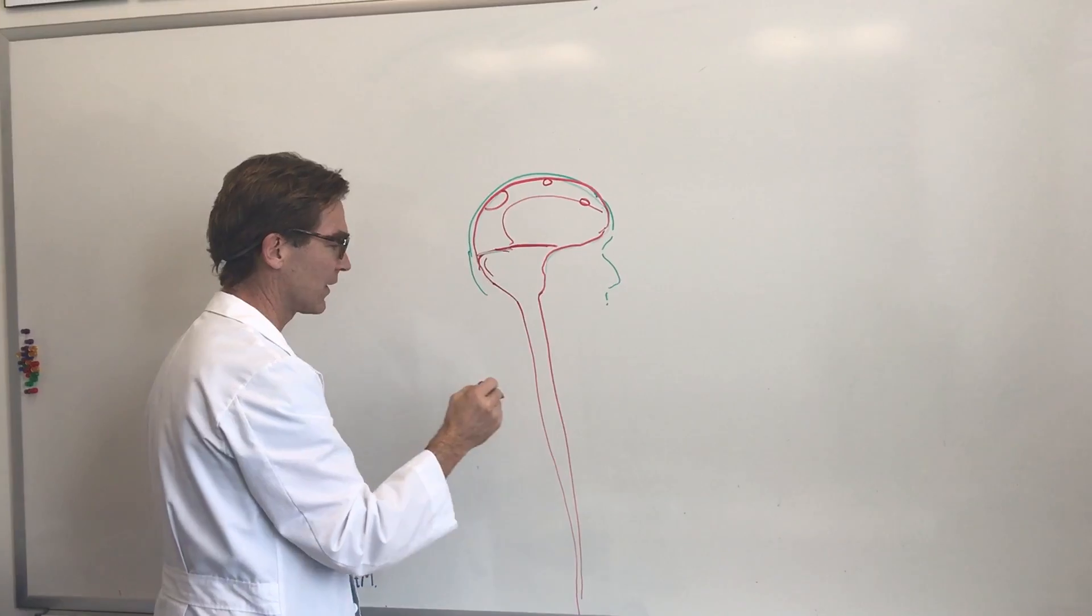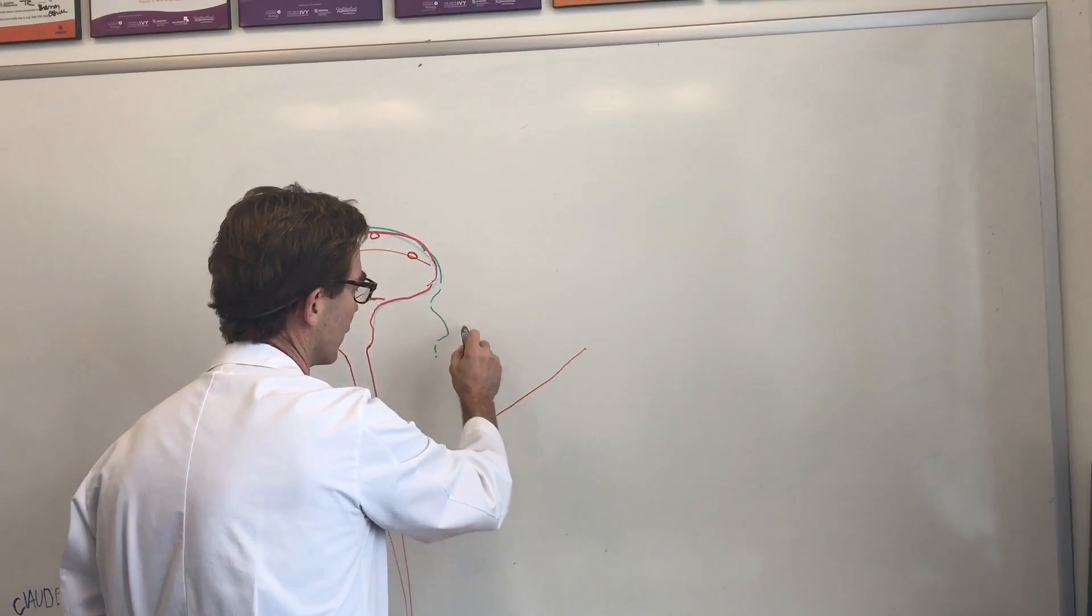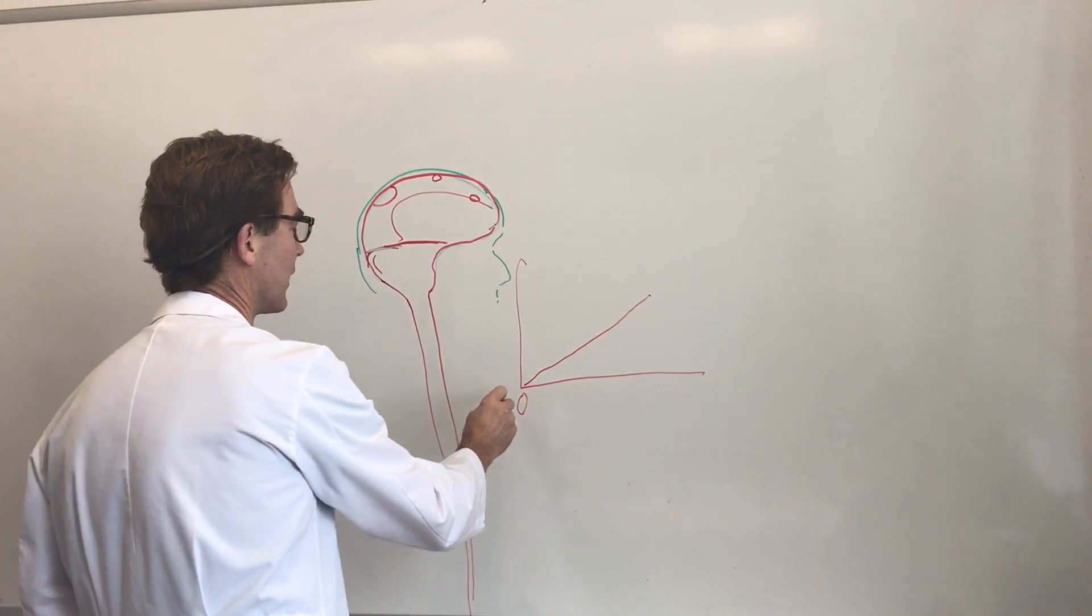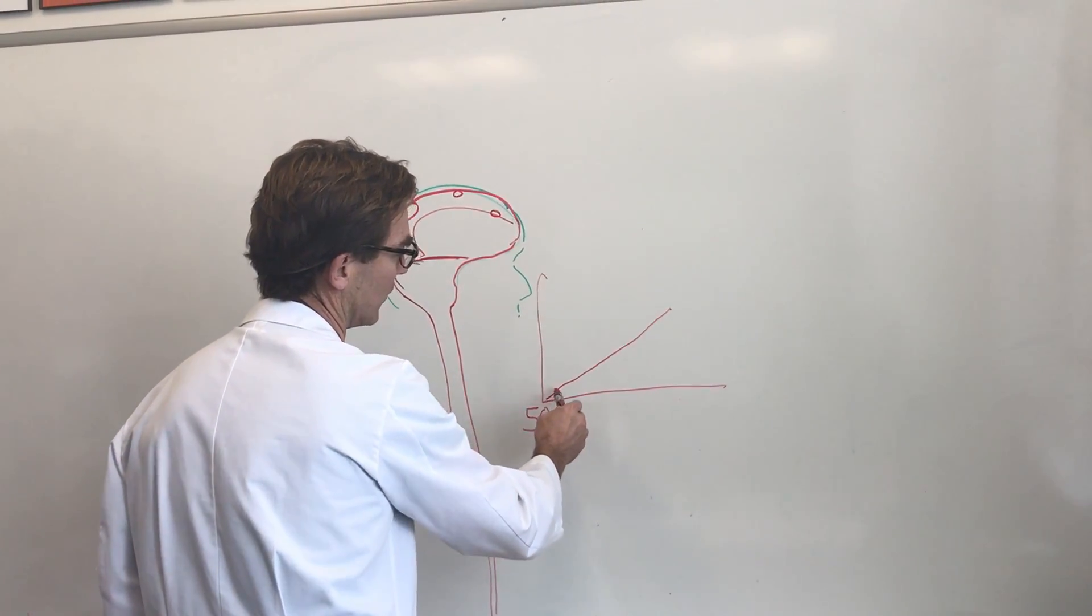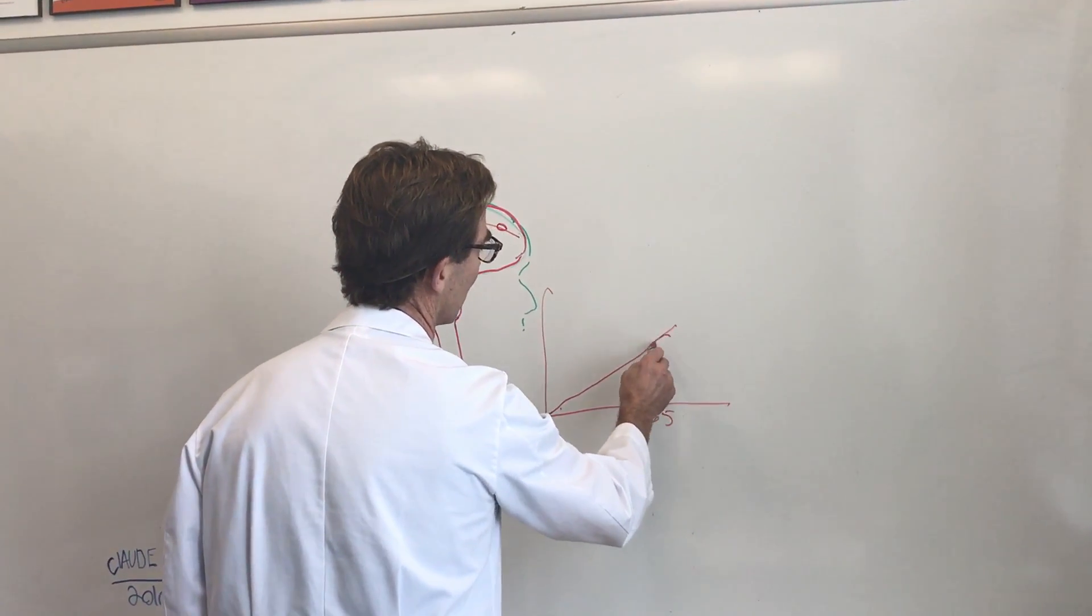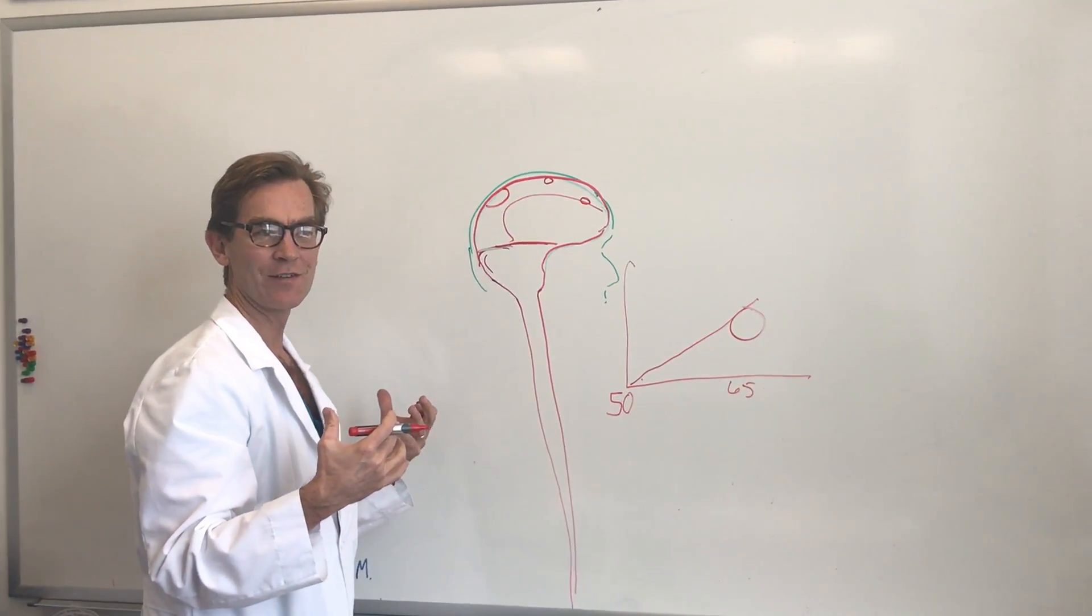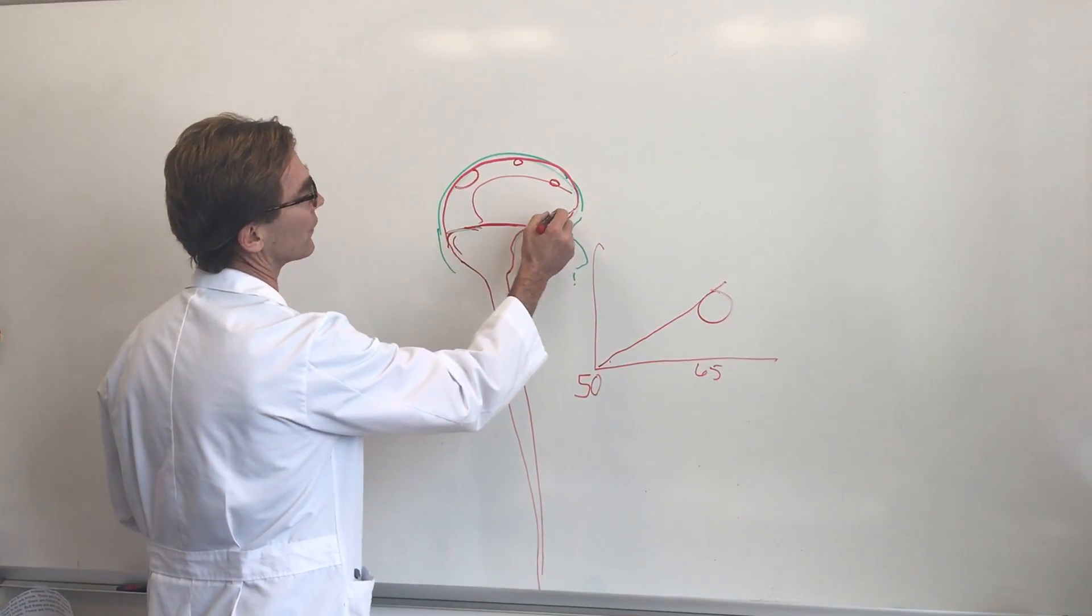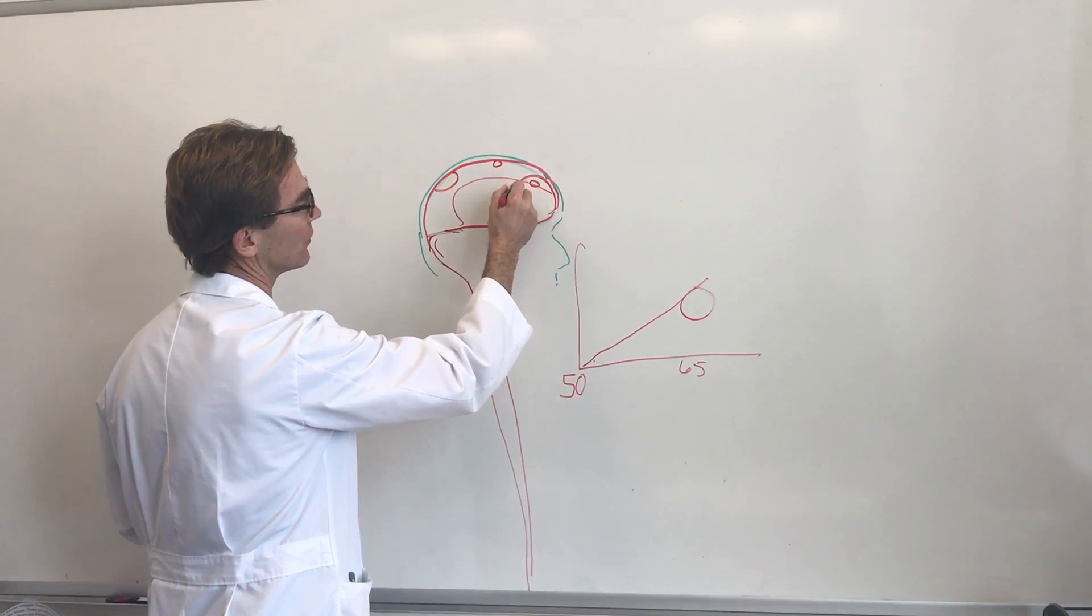In any event we do know that meningiomas can grow virtually anywhere the dura is, and they typically grow in a pattern that is sort of linear. They can grow slowly over years. If you start out and this is year zero, let's say you're a 50 year old person and you have a meningioma that starts at age 50, it could grow in a linear type of fashion a couple of millimeters every year. By the time you're 65 you may have a meningioma that is that big around.